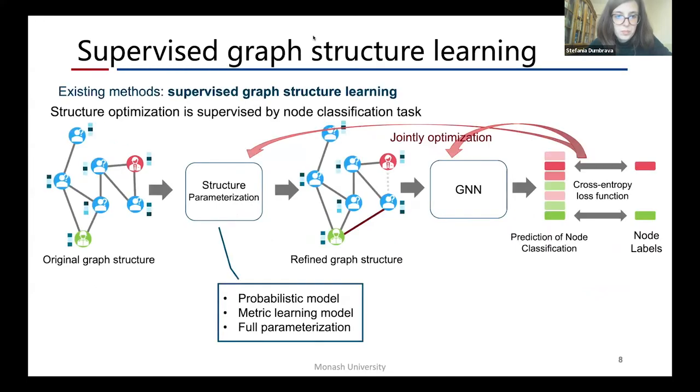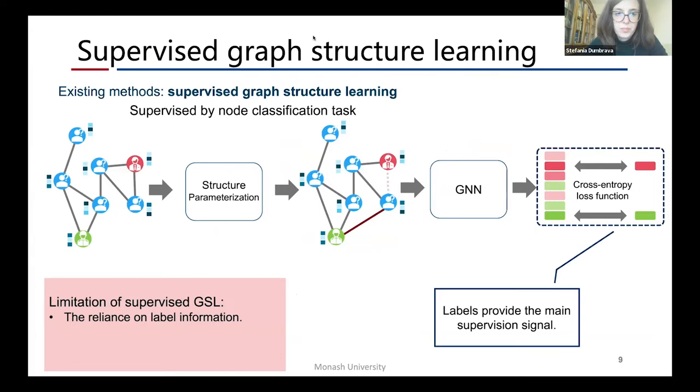Existing graph structure learning methods usually follow the supervised learning paradigm, where structure optimization is supervised by the node classification task. In this paradigm, the graph structure is parameterized with certain neural network models, such as probabilistic model or metric learning model, and then the model is jointly optimized with GNN by minimizing the cross-entropy for node classification.